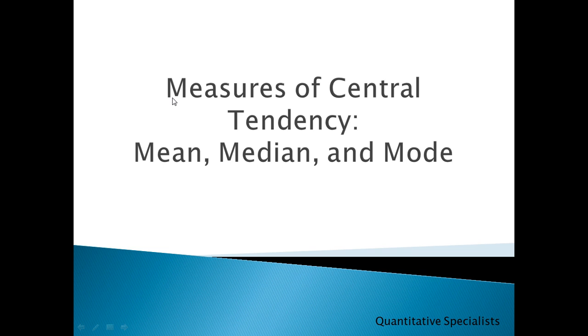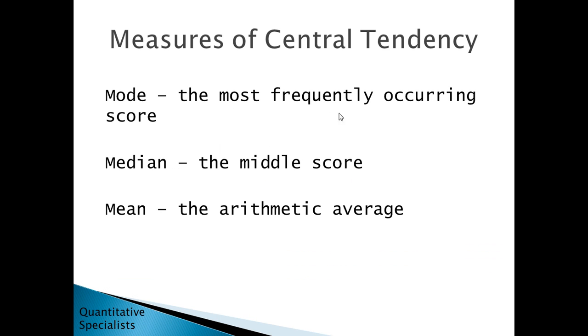In this video we'll take a look at the measures of central tendency: the mean, median, and mode. The mode is defined as the most frequently occurring score or value, the median is the middle score, and the mean is the arithmetic average. We'll take a look at each of these in turn with an example.